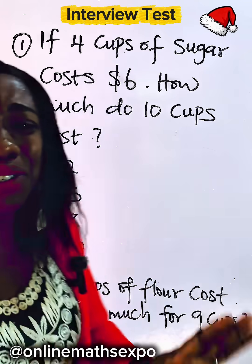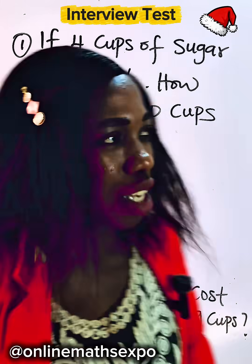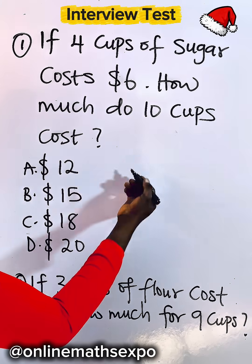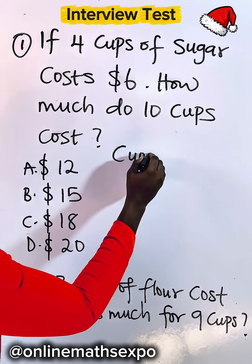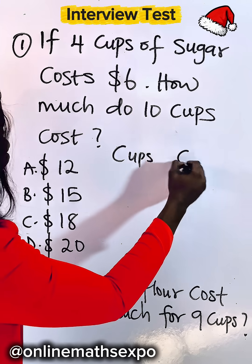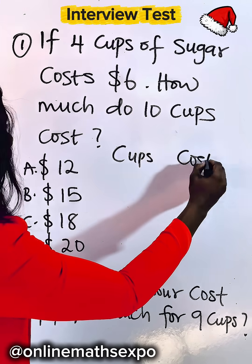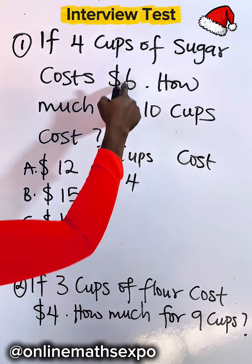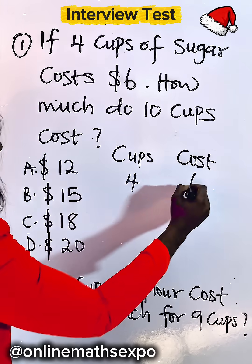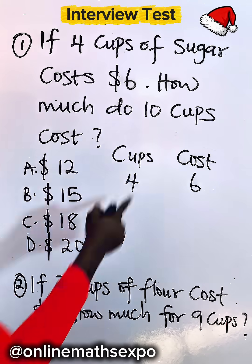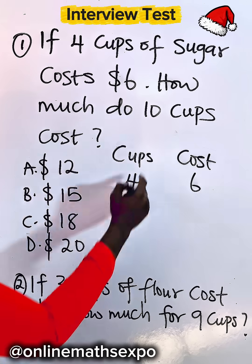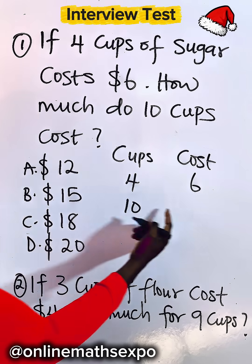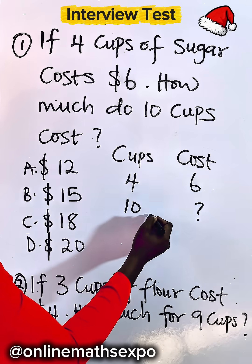This is just simple proportion. Now, 4 cups — place accordingly. This is cups, this is cost. For the 4 cups, it costs you $6. For 10 cups, place it under the cups — you want to know how much it will cost you.